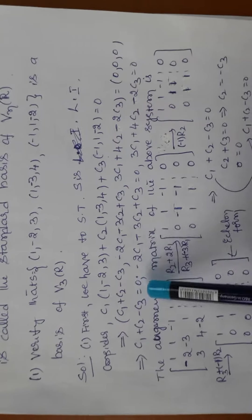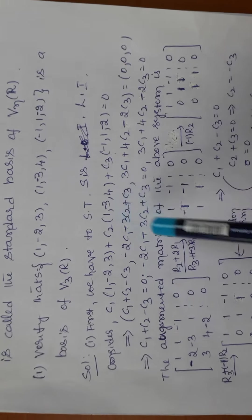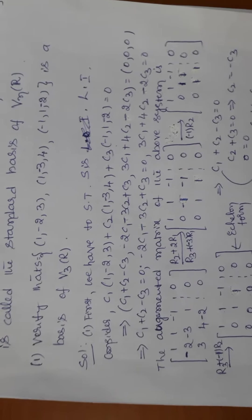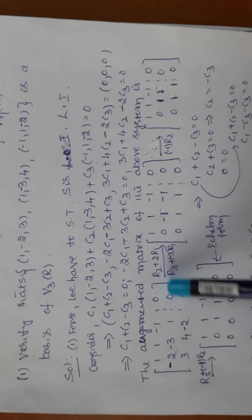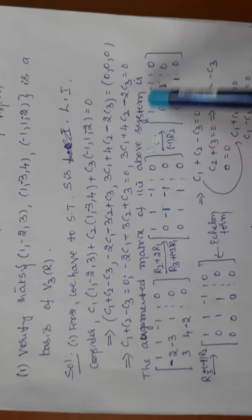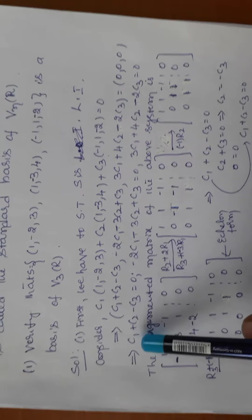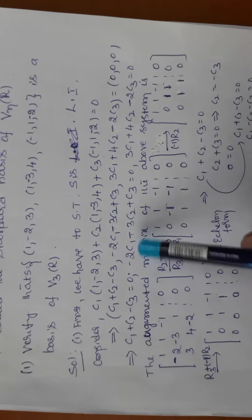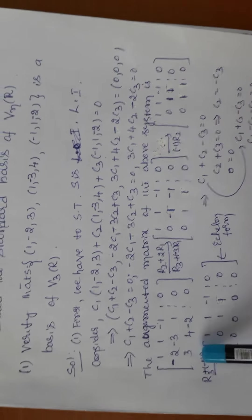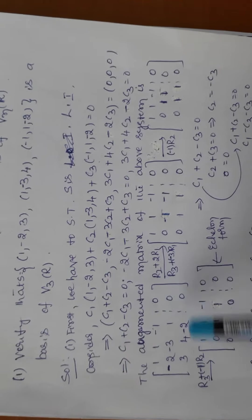Since two vectors are equal when their corresponding components are equal, each component must equal zero. This gives a system of equations in c1, c2, c3. We write the augmented matrix of this system: [1, 1, -1 | 0], [-2, -3, 1 | 0], [3, 4, -2 | 0], and apply elementary row operations.